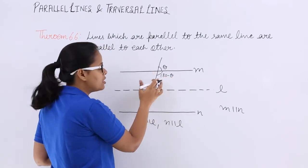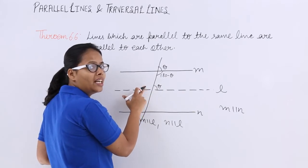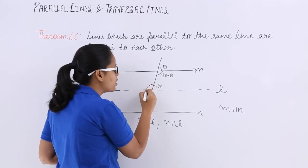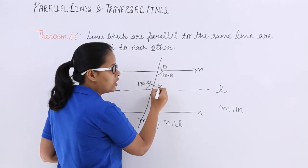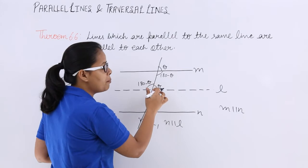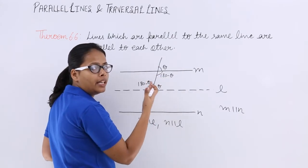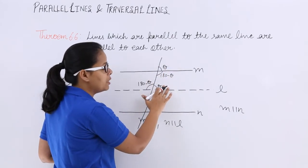And if this is 180 minus theta, then the alternate interior angles will be equal. So this will be 180 minus theta, and this will become theta. So always remember, pair of angles will be equal. If this is theta then this will be theta too.